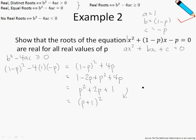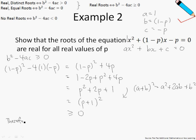Recall that A plus B squared equals A squared plus 2AB plus B squared. The square of any number is always greater than or equal to 0, because squaring always gives a positive result or zero. Therefore, we have shown that the discriminant is always greater than or equal to 0, and the roots of the equation are always real.